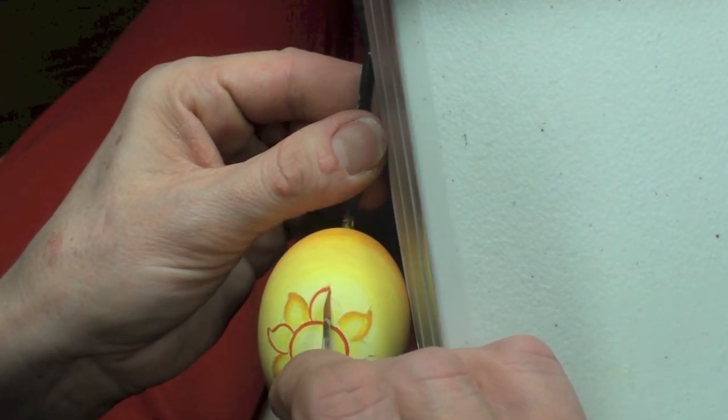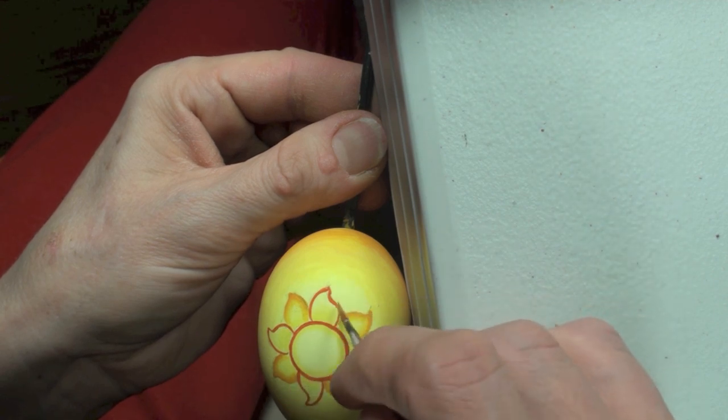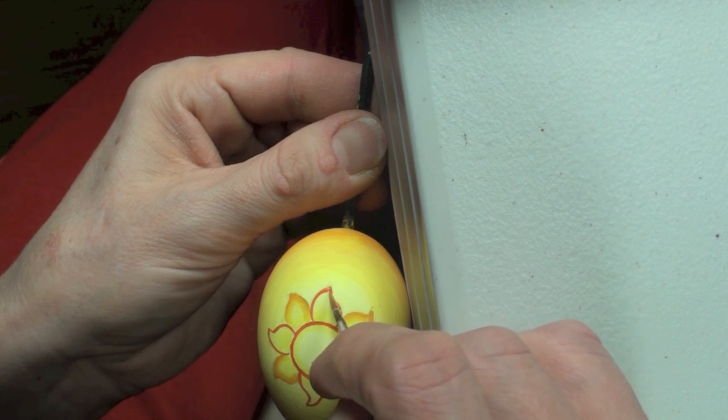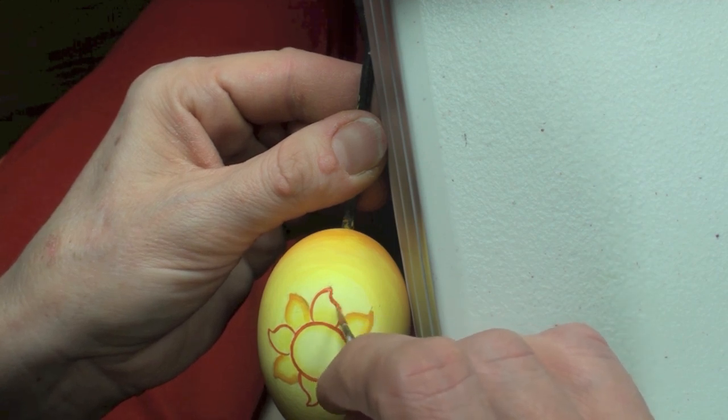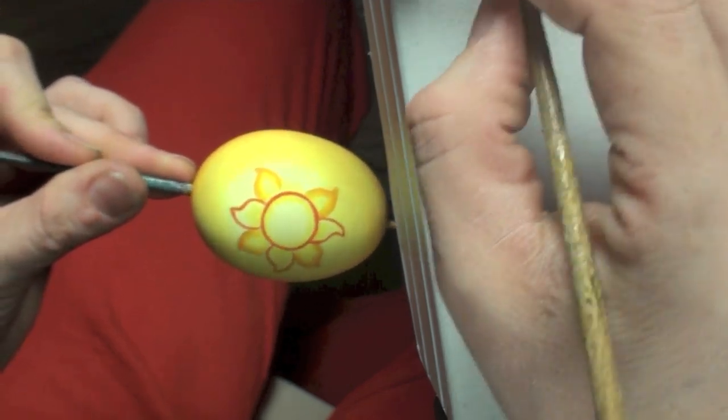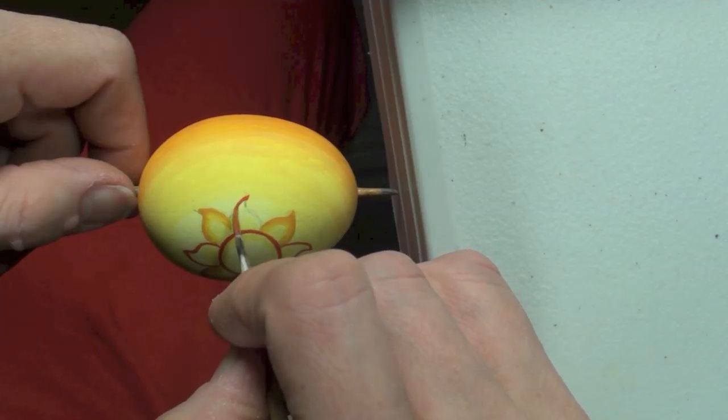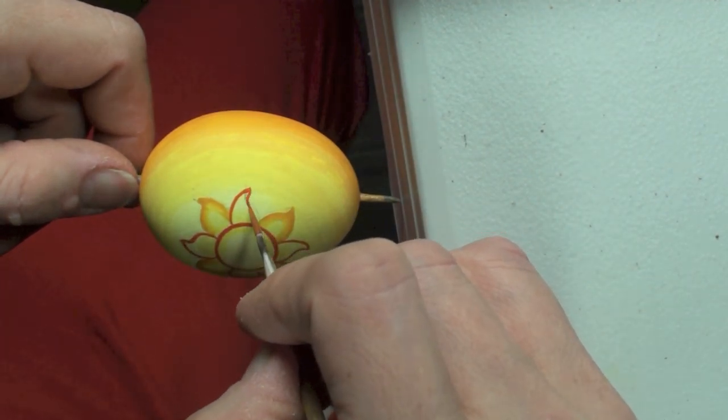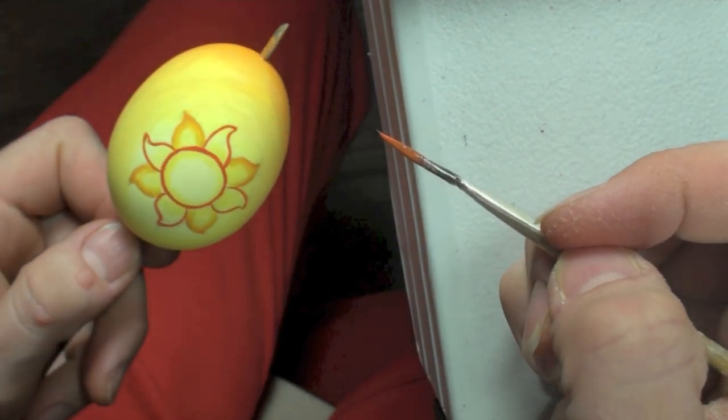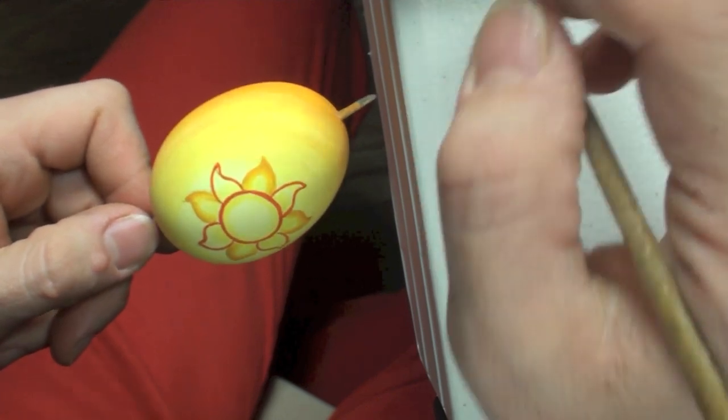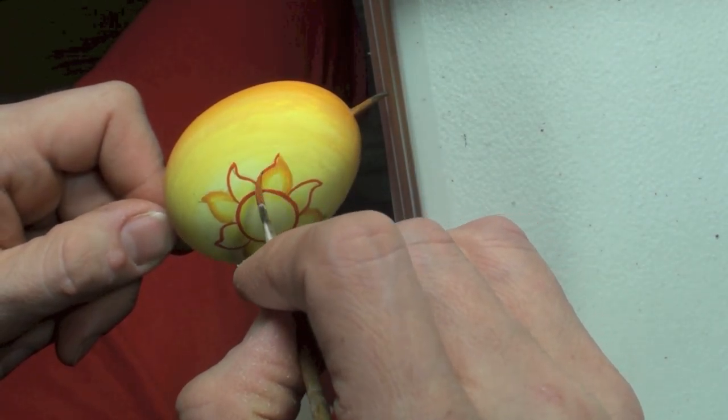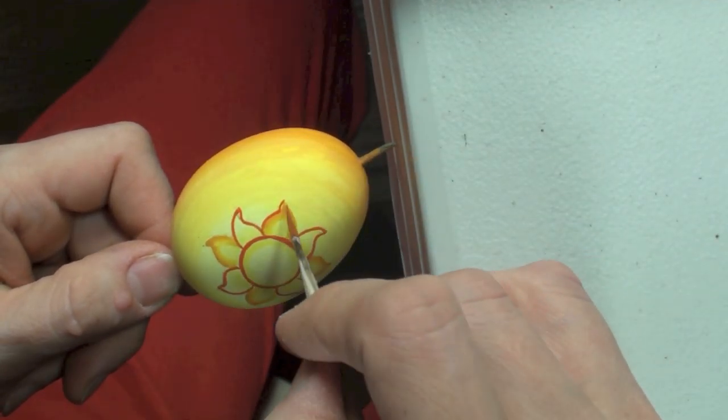Once we're done with the sun, we want to take a fine liner brush and the same color and outline the already painted rays that are left on the sun.